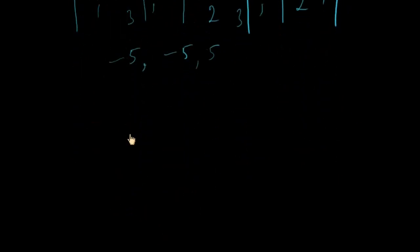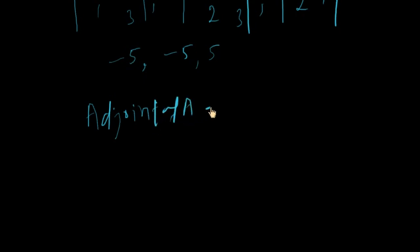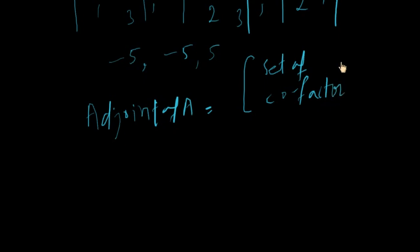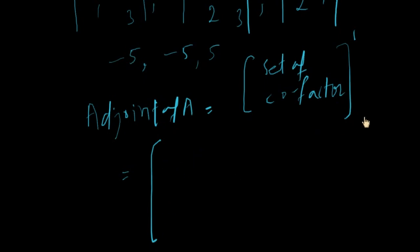Now what is the adjoint? The adjoint of matrix A is the set of cofactors of matrix A — the cofactor of the first row, cofactor of the second row, and cofactor of the third row.